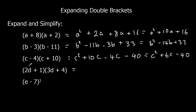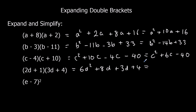Here we've got 2d multiplied by 3d — that's 6d squared. 2d times 4 is 8d. 1 times 3d is 3d. And 1 times 4 is 4. Simplifying: 8d plus 3d is 11d. So the final answer is 6d squared plus 11d plus 4.